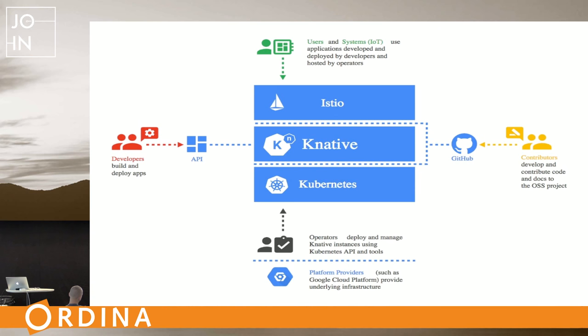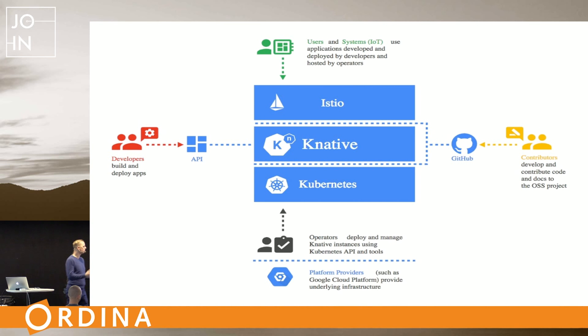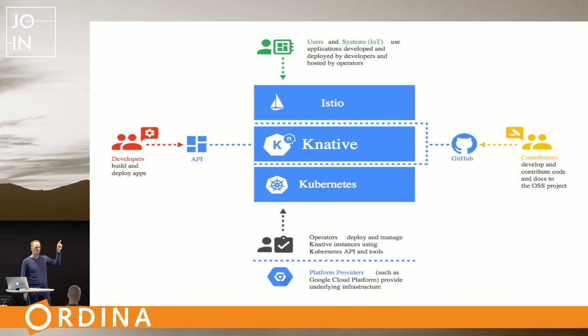Knative is still alpha but will probably become beta in a couple of months, and then possibly part of Kubernetes. Everything in Kubernetes and Knative is completely open source. Google is the main driving force, but Pivotal, IBM, and SAP have many people working on it as well, mainly because they all have Kubernetes offerings. Operators deploy and manage Kubernetes and have to operate Knative, upgrading building blocks and keeping everything up to date. Once mature enough it will probably be included in Google Kubernetes Engine as a simple tick box option.